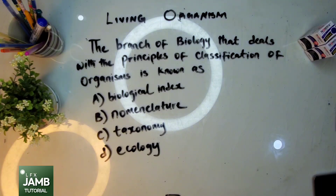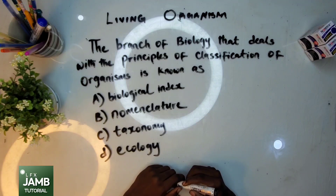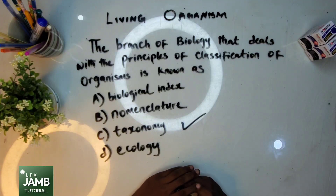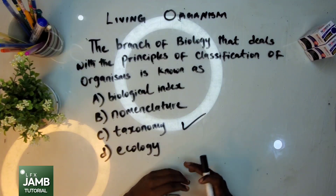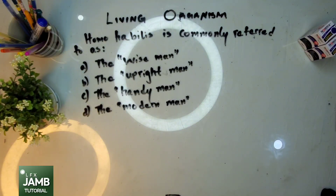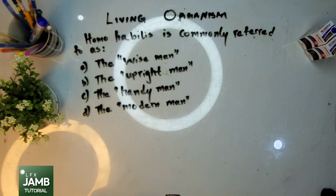Here is a question on the taxonomy of living things: 'The branch of biology that deals with the principle of classification of organisms is known as...?' Yes, correct — that is taxonomy, the branch of biology that deals with the classification of living organisms. This is an exam standard question. One more exam standard question before we say goodbye: 'Homo habilis is commonly referred to as: A) the wise man, B) the upright man, C) the handy man, or D) the modern man?' Find the answer and drop it in the comment section.